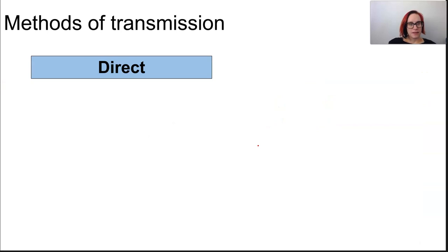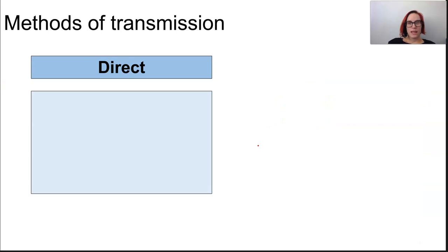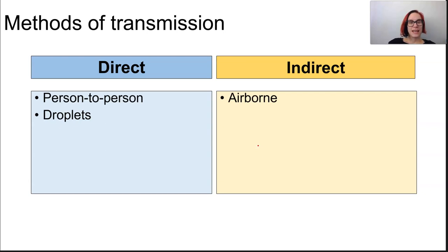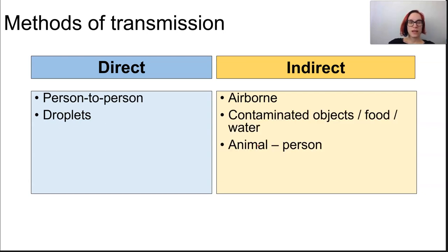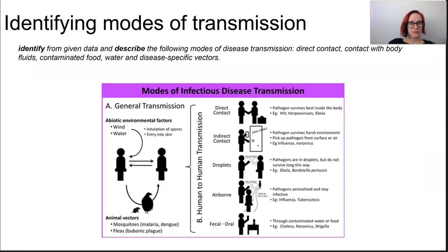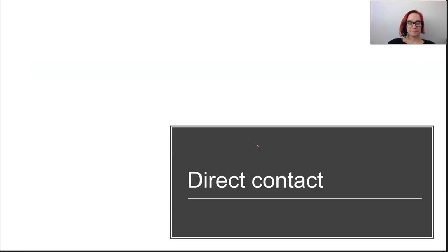Let's talk methods of transmission. We have direct, which is person-to-person or droplets. We have indirect, which includes airborne, contaminated objects, food and water, animal-to-person, environmental factors, and vectors. We've seen these before — this is just a recap.